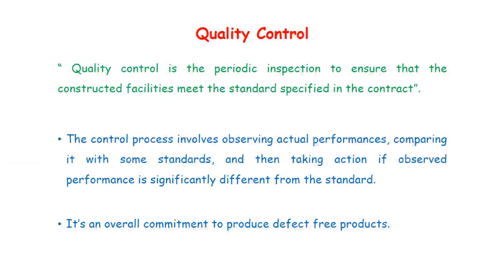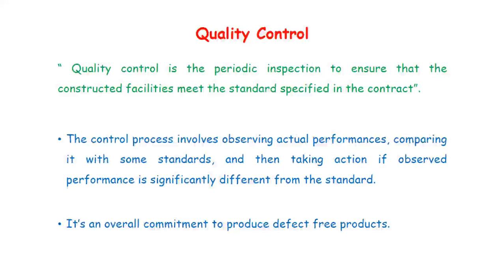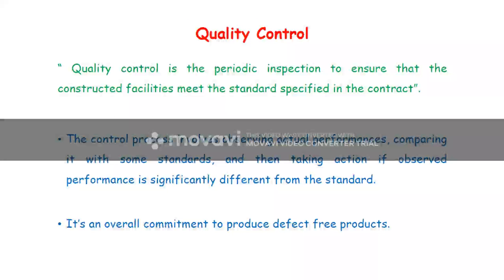Next is quality control. Quality control is the periodic inspection to ensure that the constructed facilities meet the standard specifications in the contract. Whatever the contractor is doing — the materials being used and the construction work being carried out — it must be checked whether it matches all the specifications mentioned in the contract. If not, action has to be taken and non-conforming materials must be replaced with required standard materials.